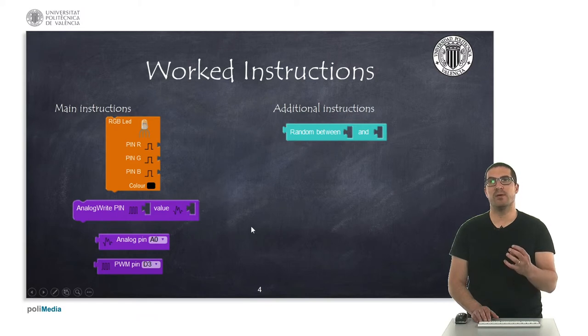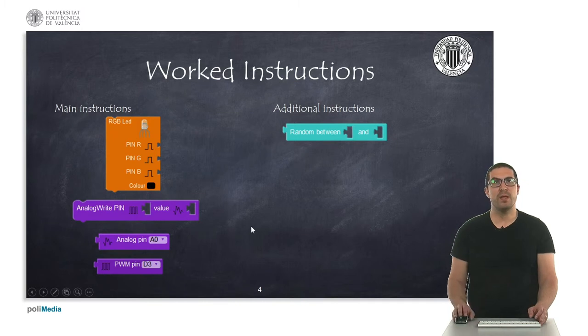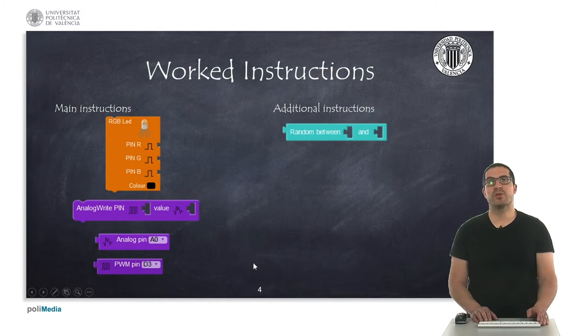The LED will ride with more or less intensity accordingly. This is simply to define the pin number for the analog pins and the pin number for PWM pins. Additionally, we will work with the random instruction, so we will use this to generate random colors.